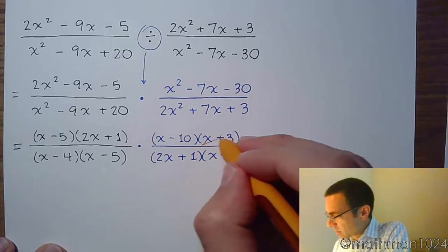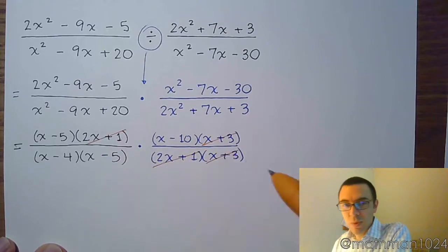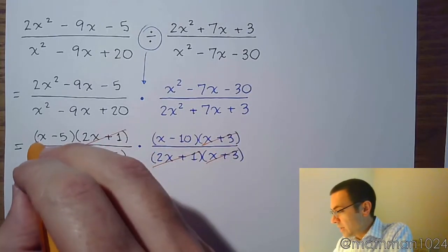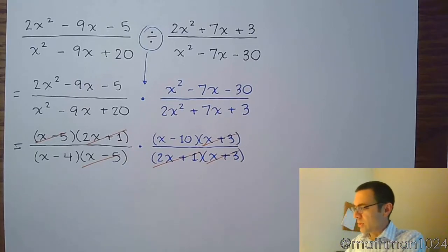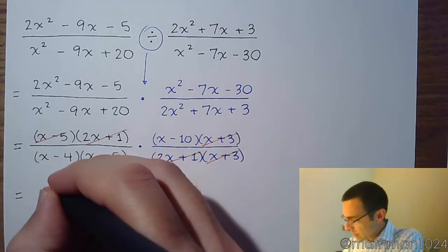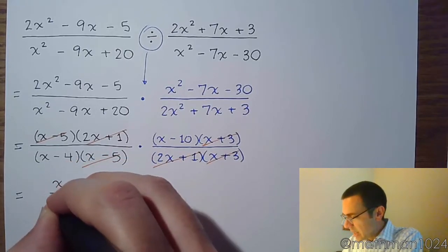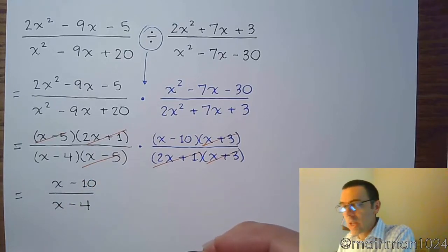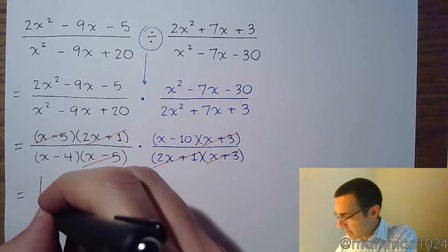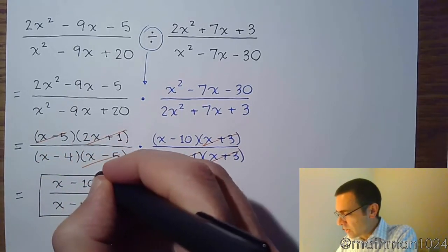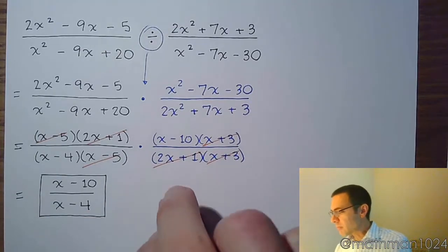Now we look for common factors that can reduce. We see x plus 3 appears in both, 2x plus 1 appears in the numerator and denominator, and x minus 5 appears in both numerator and denominator. So almost everything reduces, except for x minus 10 in the numerator and x minus 4 in the denominator. You might think we can cross out the x's or reduce the 10 and the 4, but we cannot — those don't have common factors. So we stop there.